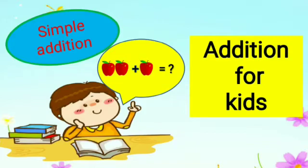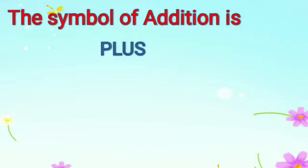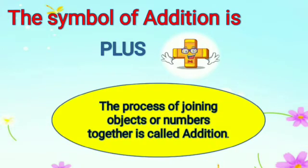Addition. The symbol of addition is the plus sign. This is the plus sign. And what is addition? The process of joining objects or numbers together is called addition. If we have a few things, when we join them all together, that is called addition. It can be numbers also. When we join numbers, that is also addition.